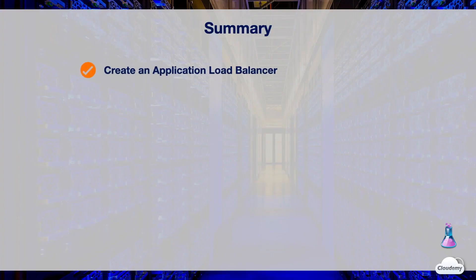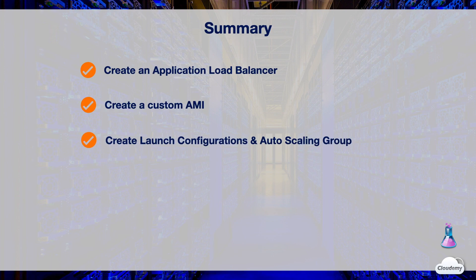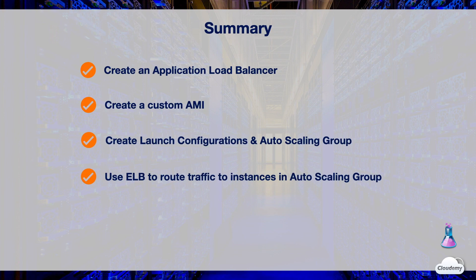In this episode, we created an Application Load Balancer that routes traffic to EC2 instances in a target group. We created a custom AMI as the golden image for EC2 Auto Scaling, along with a launch configuration and Auto Scaling group. Finally, we used Elastic Load Balancing to route traffic to instances managed by the Auto Scaling group. Both ELB and Auto Scaling are key components for building highly available and fault-tolerant systems on AWS. That's all for the ELB and Auto Scaling lab — thanks for watching and see you in the next episode.